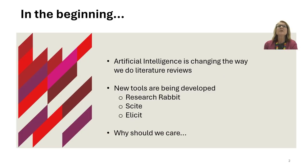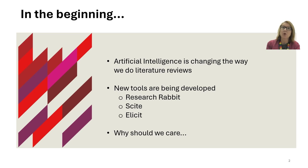Around 2022, we became aware that literature searching was changing. Finding keywords and developing a perfect search using Boolean was moving on. Artificial intelligence was enabling research processes to develop where searching large data sets could be done with increased efficiency.